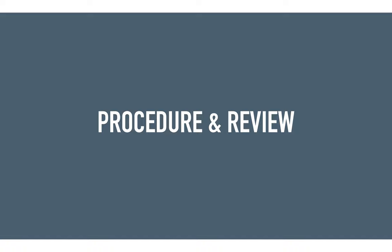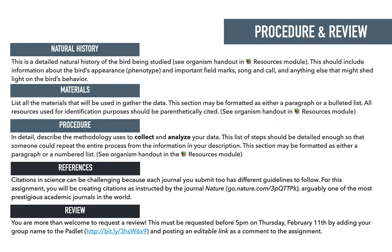Now, procedure and review. There are extra sections in this assignment that were not part of the 2.6 demonstration of understanding. The first is a natural history section. Since you're studying a particular organism, we need to know about it. Provide detailed information about your organism: behavior, habitat, where they live, what they eat. There's a full list of what should be included in the handout, which is available in the resources module — so make sure to review that.